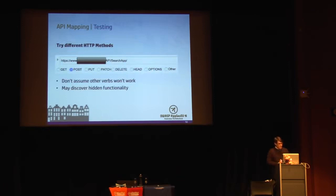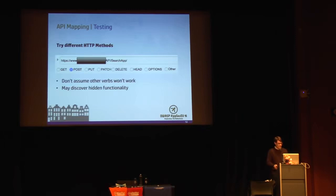A couple of quick testing steps: when mapping out the API, try different HTTP methods. Don't just assume that because documentation says to use POST, that GET won't work as well. Try other verbs — don't assume that PUT and DELETE won't work. They often will, and that can lead to some hidden functionality. So don't just assume the documentation, but actually try other methods as well.